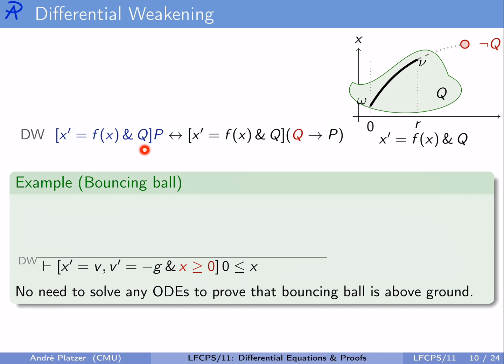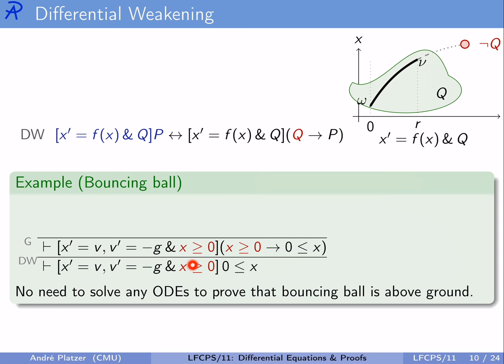We apply the differential weakening axiom to replace the postcondition with evolution domain constraint implies postcondition, pulling out the evolution domain constraint as an assumption. Then we use Gödel's generalization proof rule to get rid of the differential equation and prove the postcondition in isolation. We need to prove that the property from the evolution domain constraint implies 0 less or equal x, and it does by trivial arithmetic. Observe: there was no need to solve the ODEs. The fact that we remain above ground when our evolution domain constraint says so holds without considering the differential equation — it holds for any differential equation.